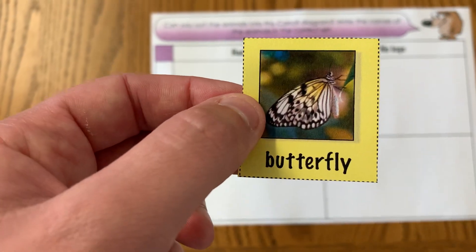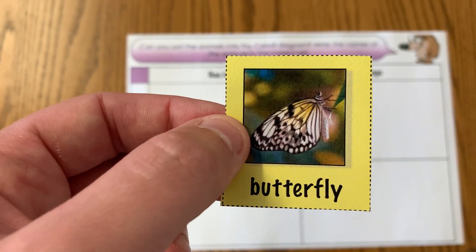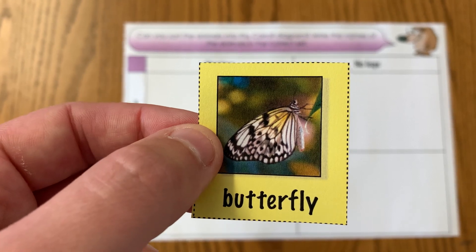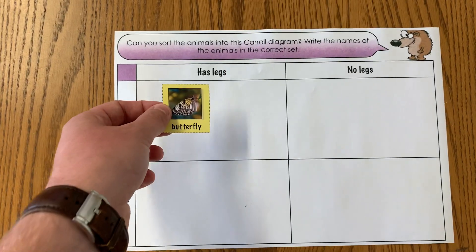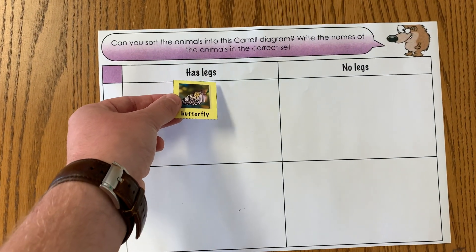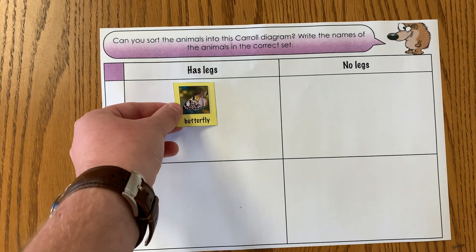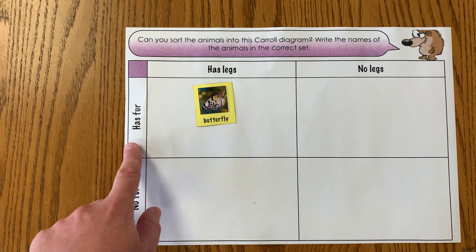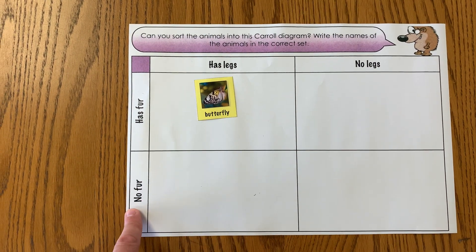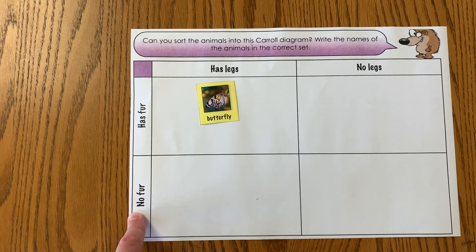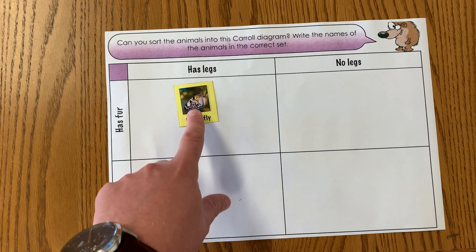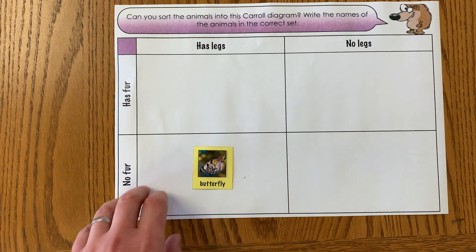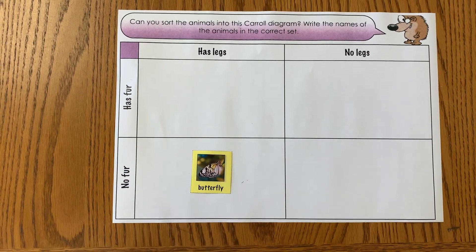So the butterfly — I can see in the picture and I know already that they have legs, so I'm going to put it underneath 'has legs.' But now I need to check whether it has fur or doesn't have fur, and a butterfly doesn't, so I move it down to this box.